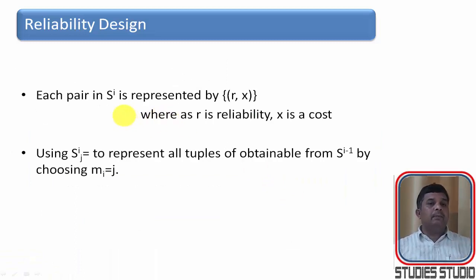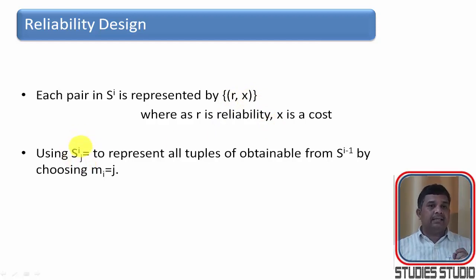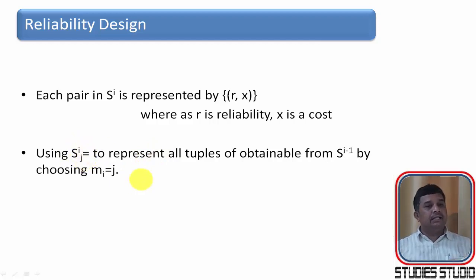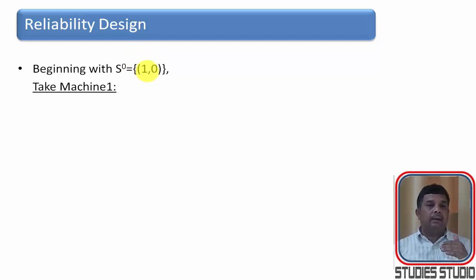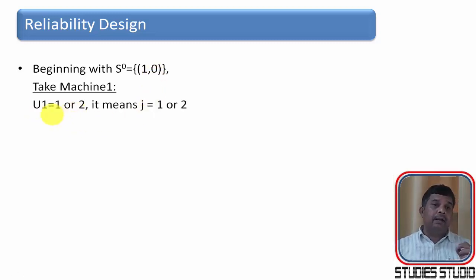To solve the problem, we use two notations. S_i represents a set of pairs (r, x) where r is the reliability and x is the cost. S_{i,j} represents i number of devices with j copies of device i. We find S_{i,j} from the previous S_{i-1}. We begin with S_0, taking reliability = 1 and cost = 0 as the initial values, since we are multiplying reliabilities and start at one. The upper bound for device 1 is 2, so we consider j = 1 or 2.